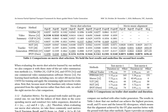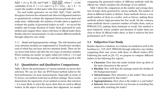The framework is evaluated using a comprehensive movie trailer dataset, and its performance is compared with state-of-the-art trailer generation and video summarization methods. The evaluation metrics used include TOP-K precision, recall, and F1 score, which measure the alignment between the generated trailer shots and the official trailer shots. Additionally, the KL divergence between the estimated and observed alignment matrices is used to evaluate the alignment quality. The results show that the proposed iPod-based method achieves the best performance on most measurements, especially in terms of F1 scores.